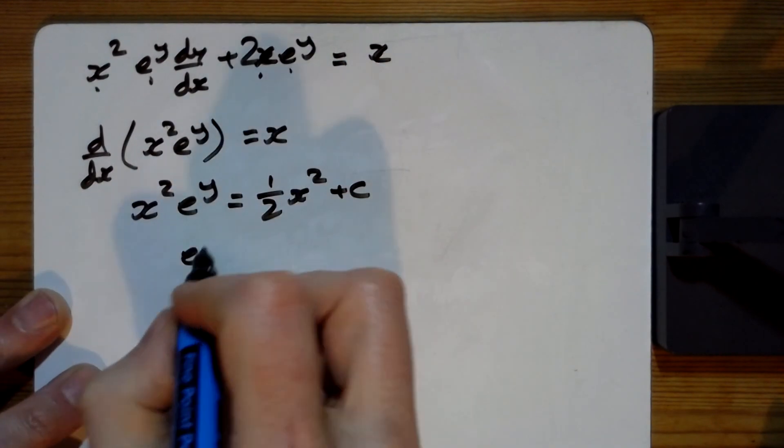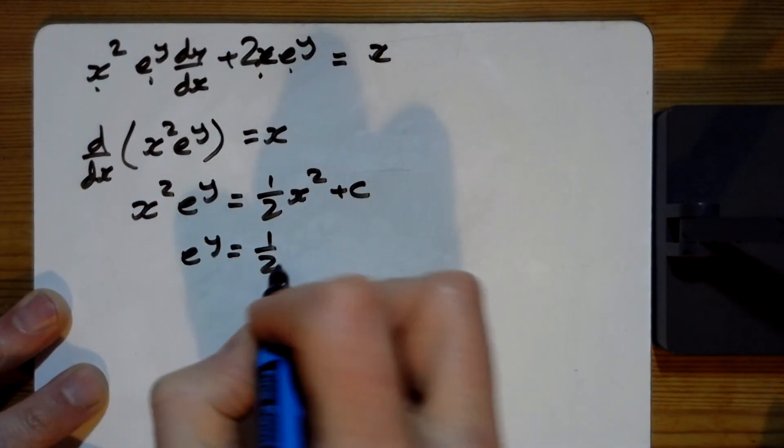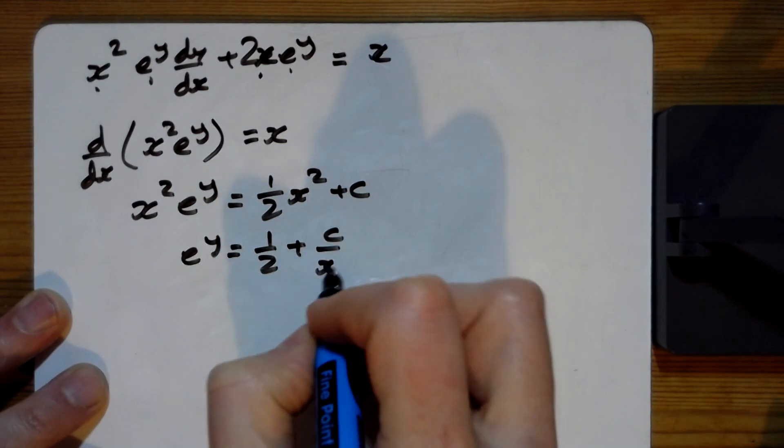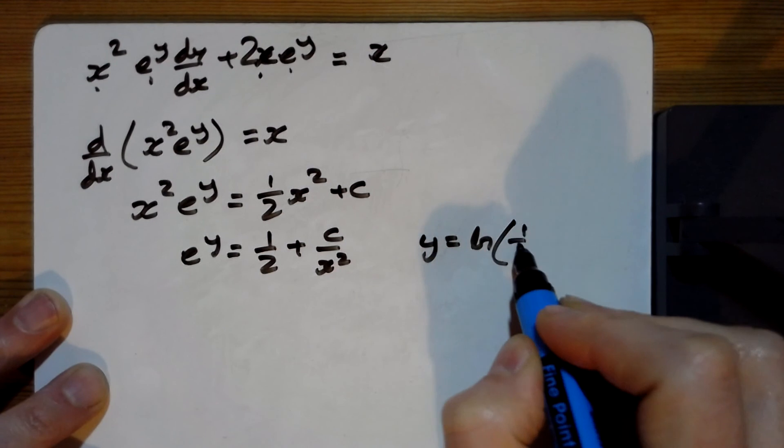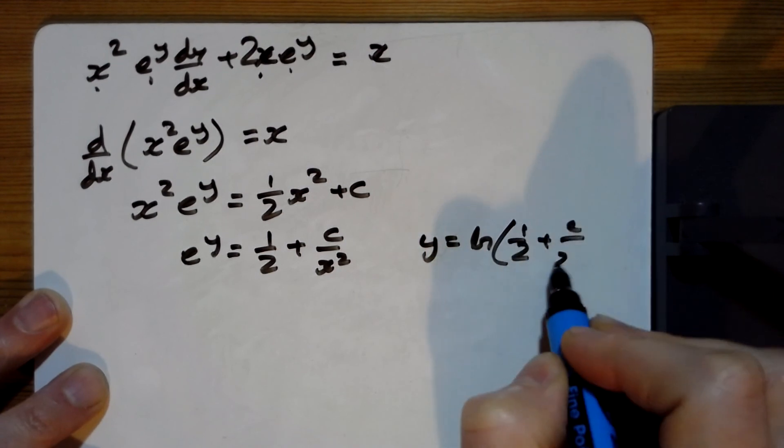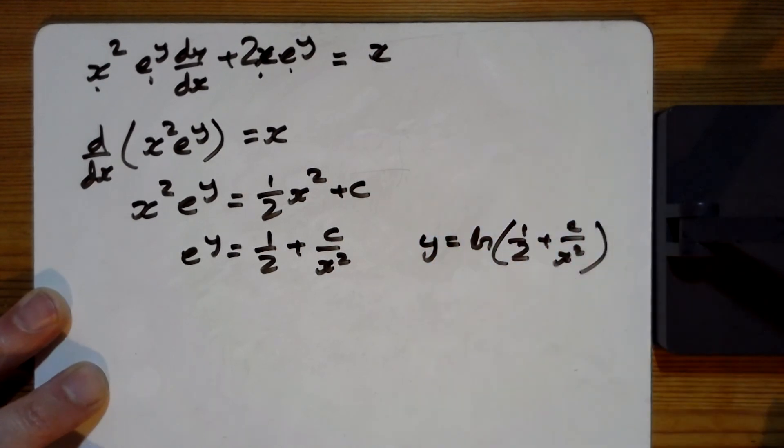Tidying it up, should we divide both sides by x squared? And then we'll ln both sides. So y equals the ln of a half plus c over x squared. That looks OK.